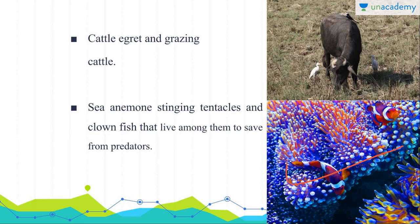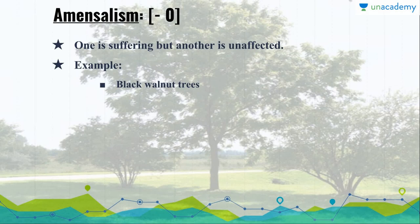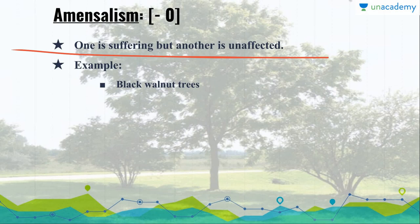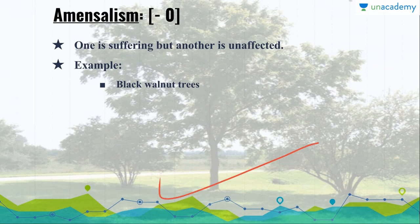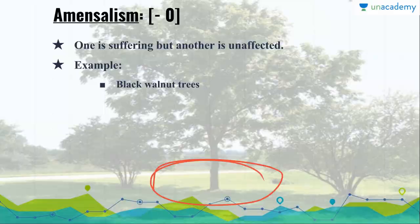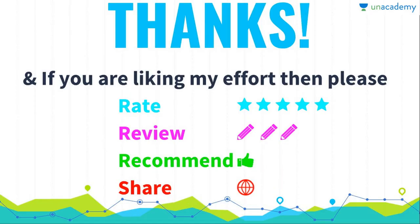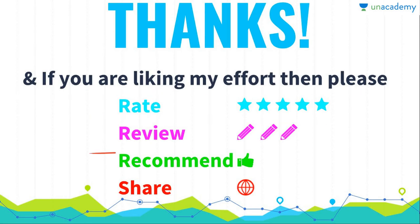Lastly, in amensalism, one species suffers while the other is unaffected. An example is the black walnut tree — its roots secrete toxic elements, causing cattle grazing in the surrounding area to become ill. I hope you understand all these population interactions and their classifications. If you are liking my content, please rate, review, recommend, and share these lessons. Thank you!